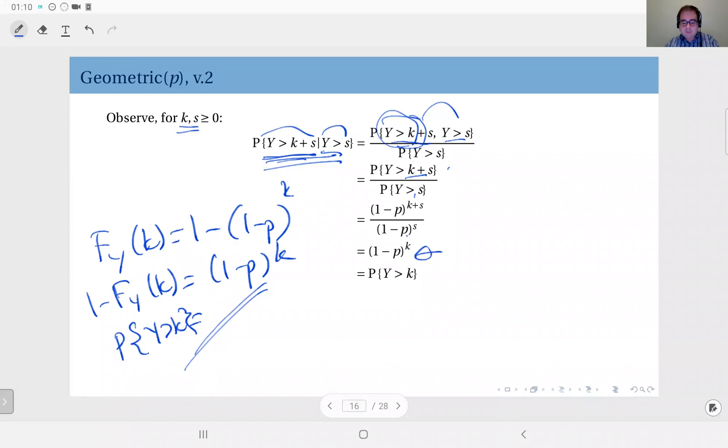Essentially, given the random variable exceeds s, you can in fact start the clock at that time again. So given this, the probability that you exceed k plus s is equal to the probability that you just start another parallel random variable, the geometric random variable at that point, and that one exceeding k.